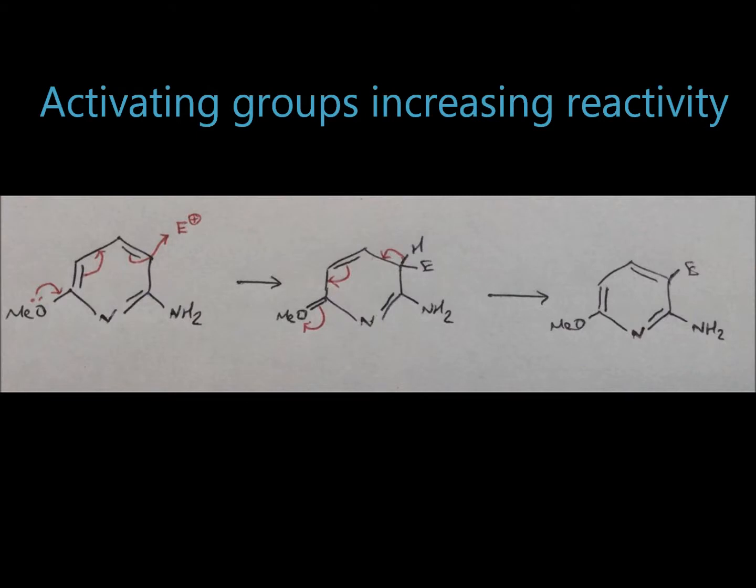Now let's look at how electron donating groups can make pyridine derivatives more reactive towards electrophiles. Electron donating groups such as CH3O and NH2 are capable of donating lone pairs into the pyridine derivative, making it more reactive towards electrophiles.